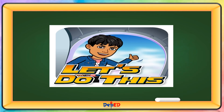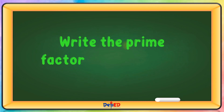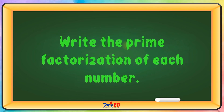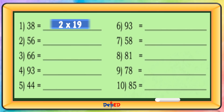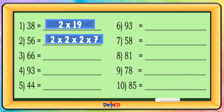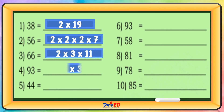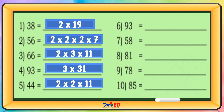Let's do this. Write the prime factorization of each number. 38 is 2 times 19. 56 is 2 times 2 times 2 times 7. 66 is 2 times 3 times 11. 93 is 3 times 31. 44 is 2 times 2 times 11.